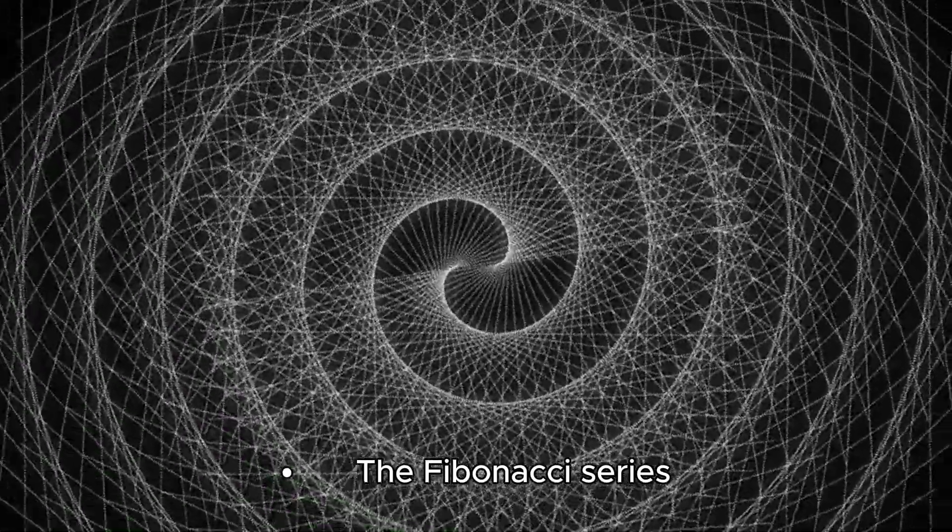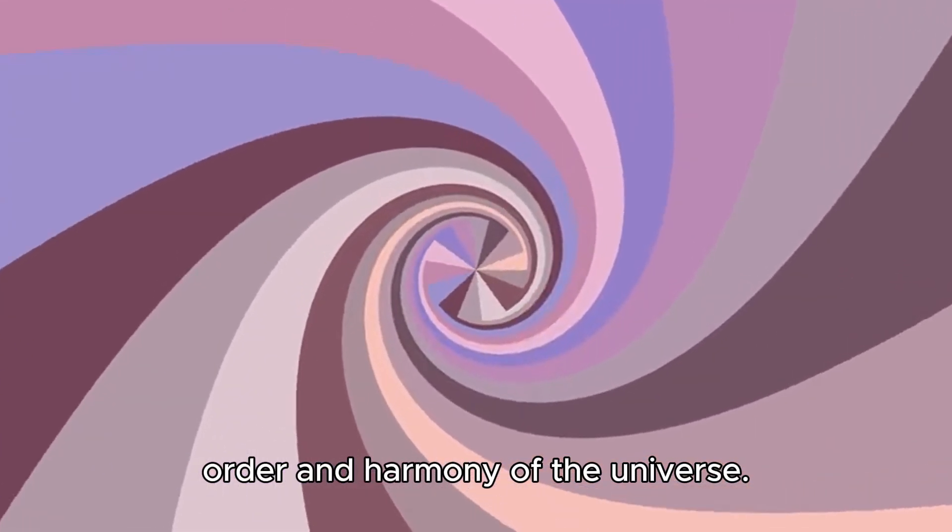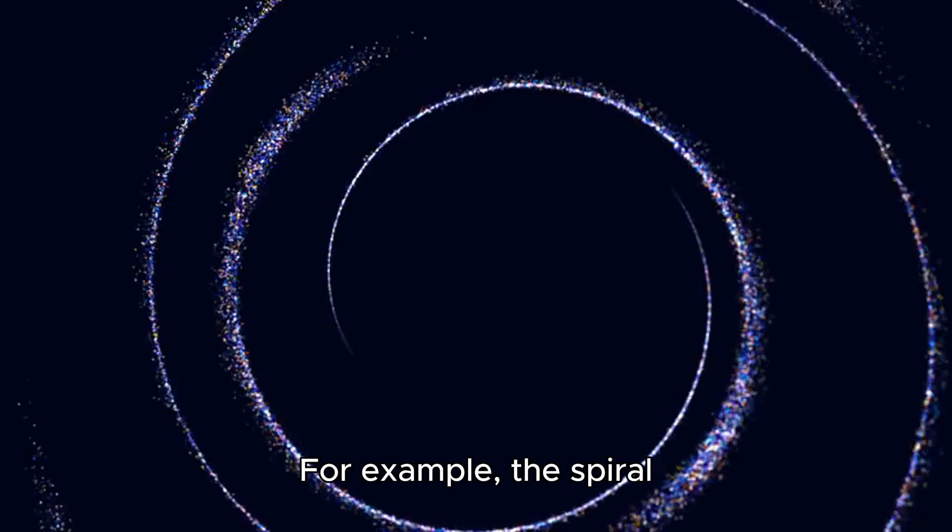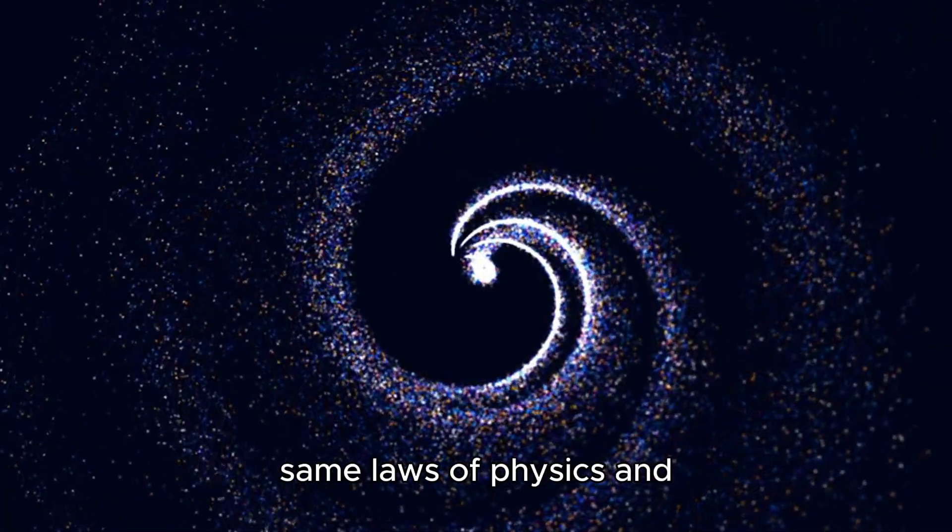The Fibonacci series is a reflection of the underlying mathematical order and harmony of the universe. For example, the spiral shape of galaxies or hurricanes follows the same laws of physics and geometry.